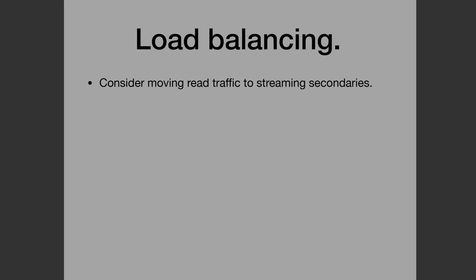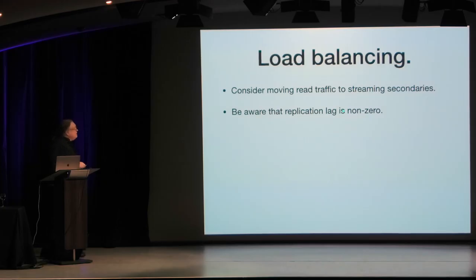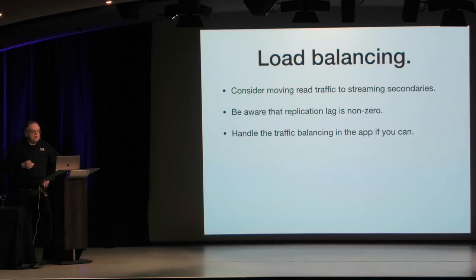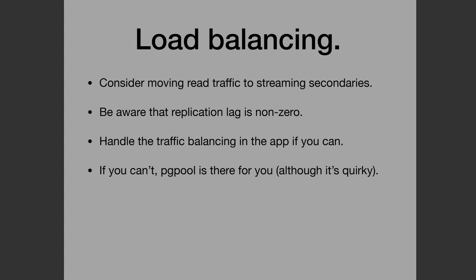At this point, your traffic is probably getting to the point that you will need to think about load balancing. Consider moving read traffic to streaming secondaries - that's something they're very good for. Be aware that on any replication technology you will have replication lag, unless you switch everything to synchronous replication, at which point you've destroyed your performance. Ideally, you want to handle the traffic balancing in the app itself - the app understands what it can direct to read secondaries and what it needs to direct to the primary for writes. If you can't, there's PGPool - it's there and will do the traffic division for you, although it's kind of quirky.